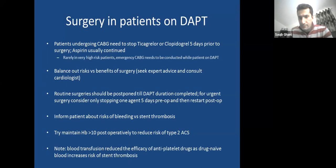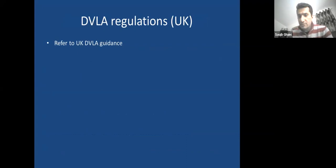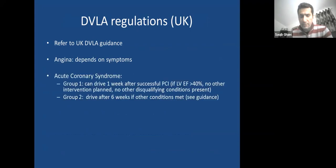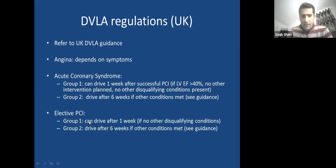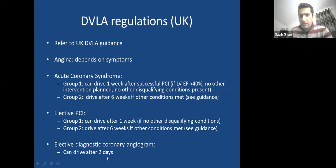Regarding driving: always refer to DVLA guidance. For angina, depends on symptoms — stop if symptoms occur at the wheel or at rest. For ACS previously it was four weeks; now group 1 (standard car) can drive after one week if successful PCI, LV ejection fraction above 40%, no further intervention planned, and no other disqualifying conditions. Group 2 vehicles: six weeks. Elective cases: one week for group 1, six weeks for group 2. Diagnostic angiogram only: two days.